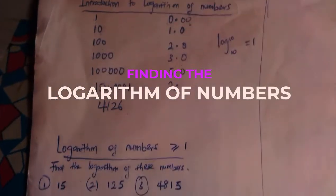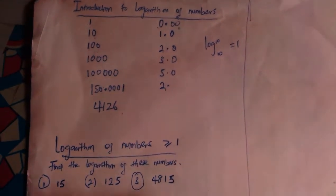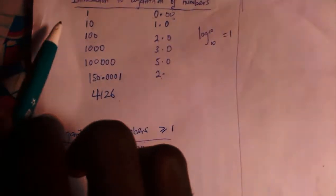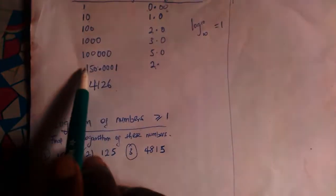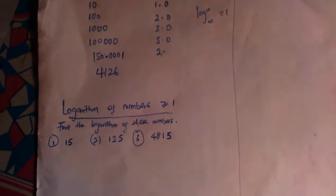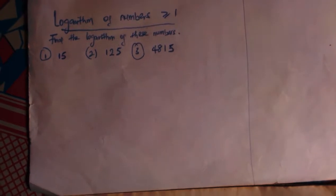Remember this was our last class where we looked for what the characteristic of 1 was, which was 0 point, 10 was 1 point, up to 100,000 which was 5 points. Now the same idea we are going to be using here.